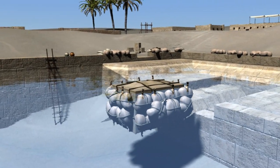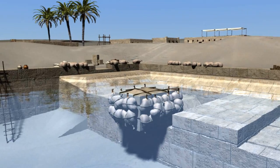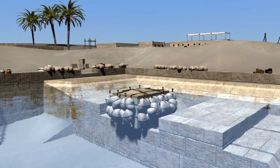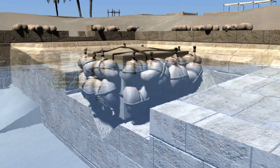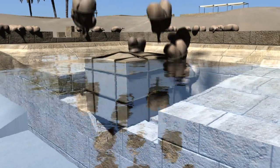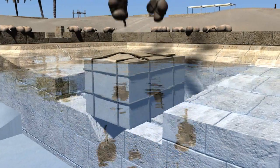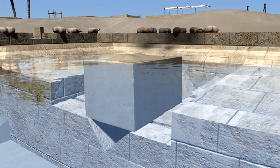We move the square block into place and then remove the floats. The uneven surface juts out of the water. This is the part that will need chiselling away.